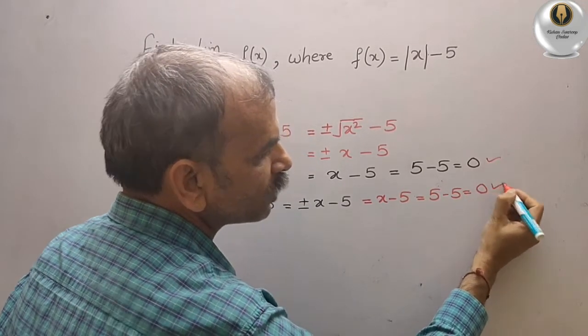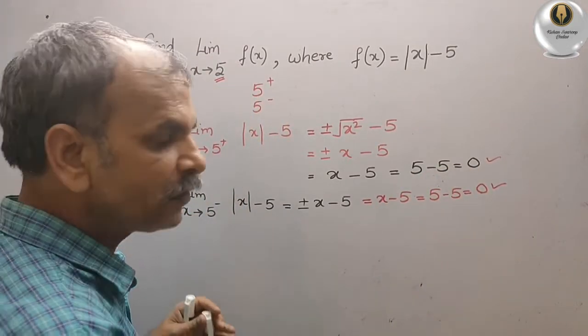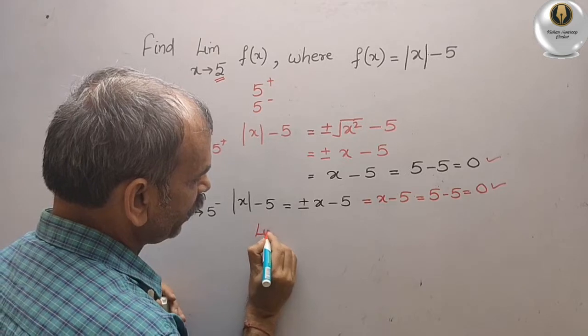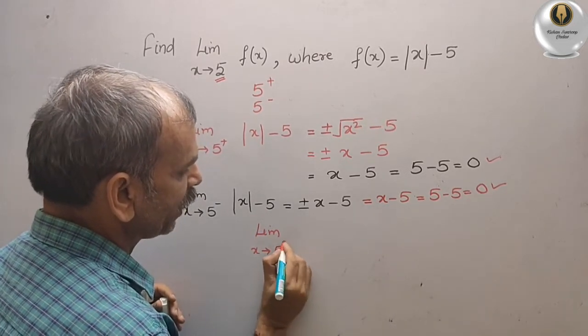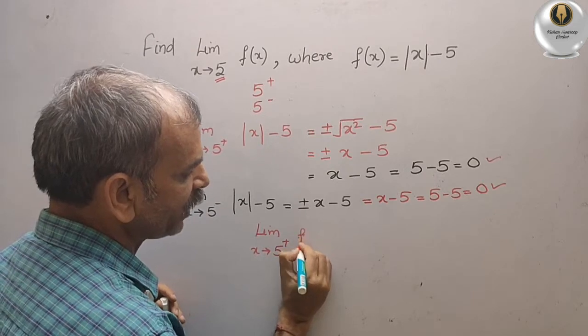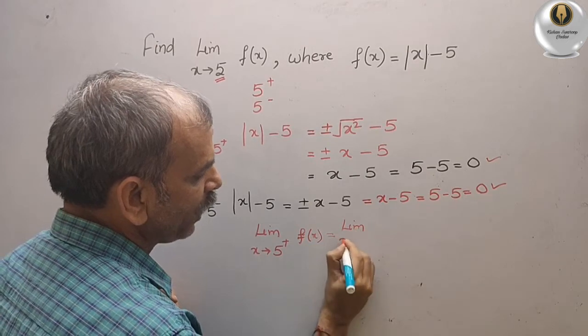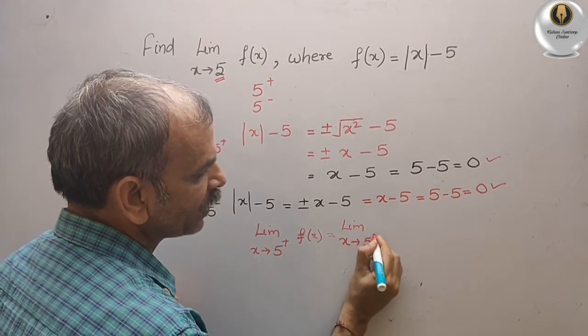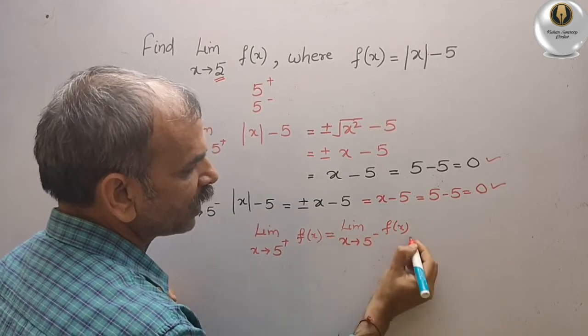Now you got both the conditions 0, that means it is a function. We will simply write here, limit x tends to 5 plus f(x) is equal to limit x tends to 5 minus f(x). So this is your answer.